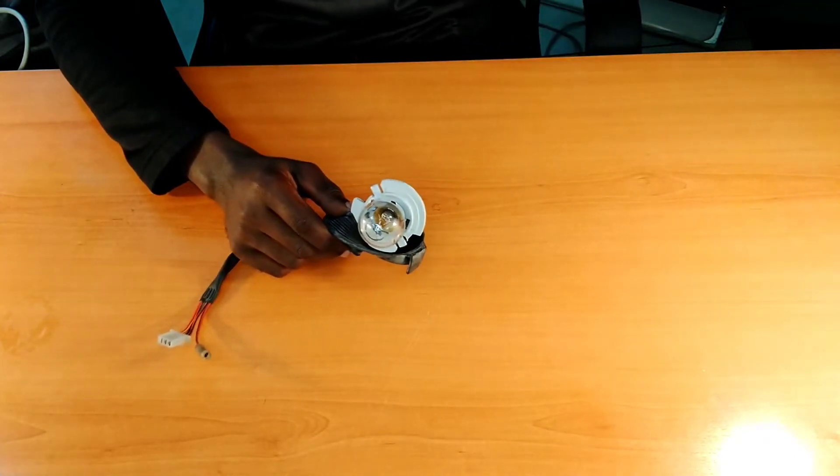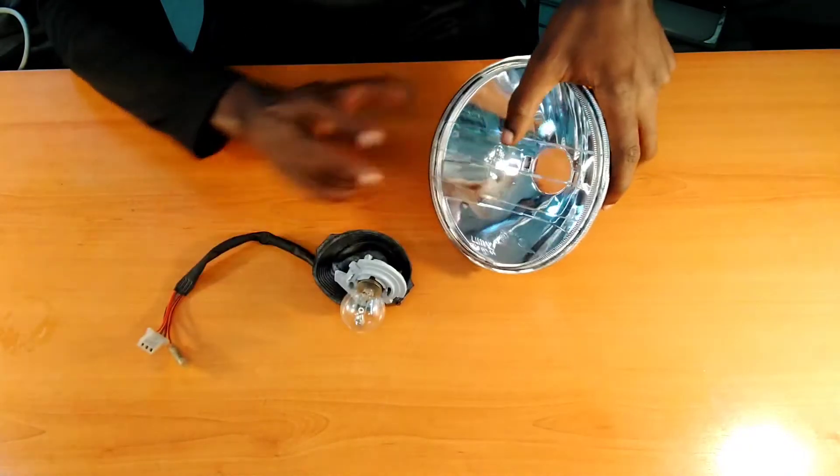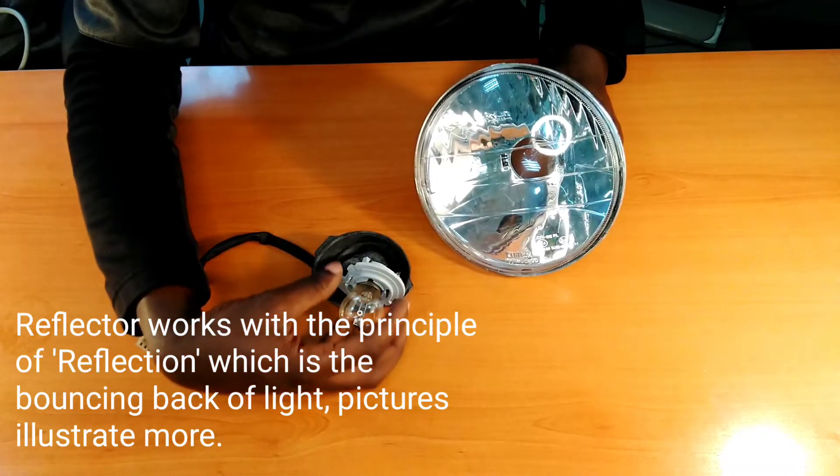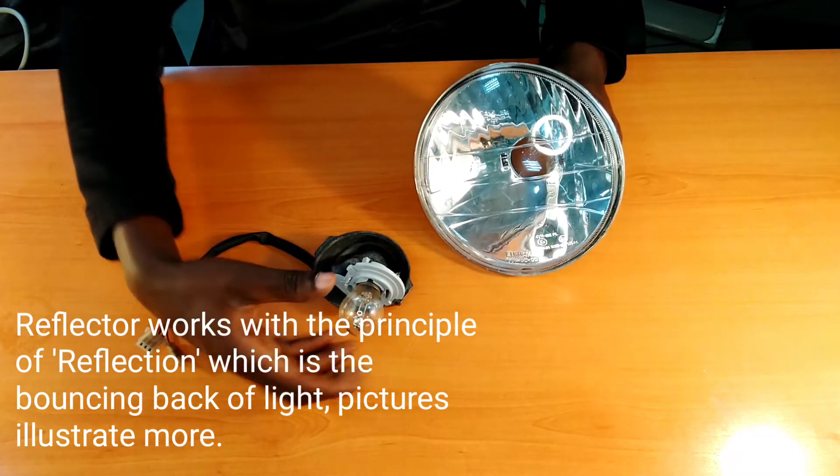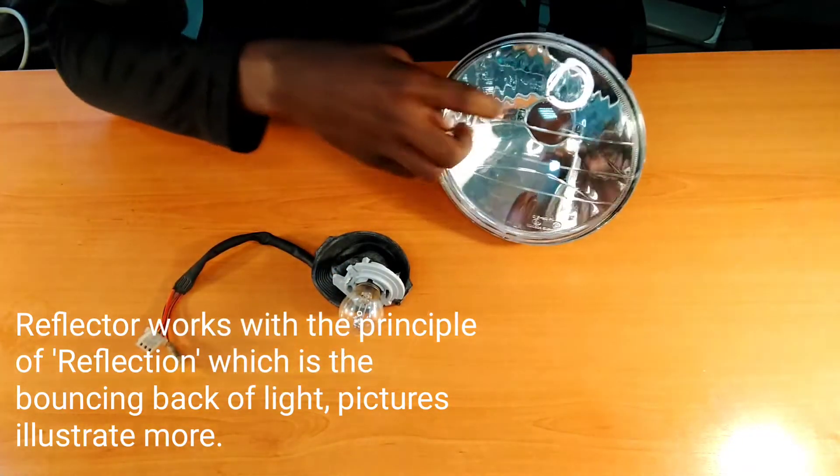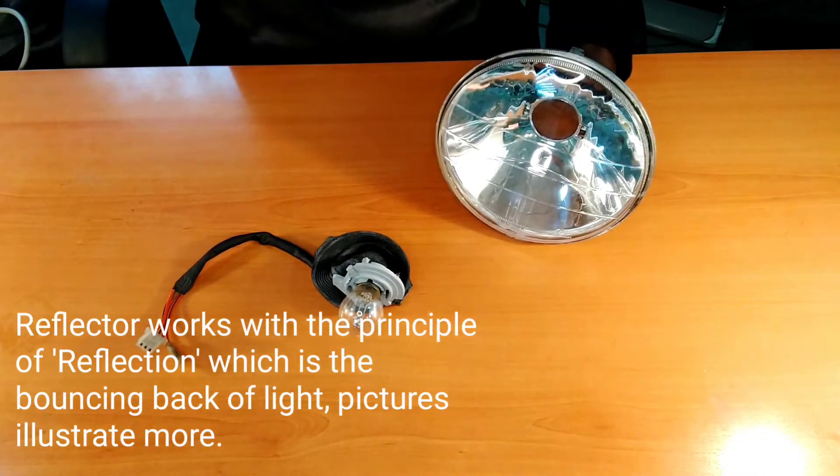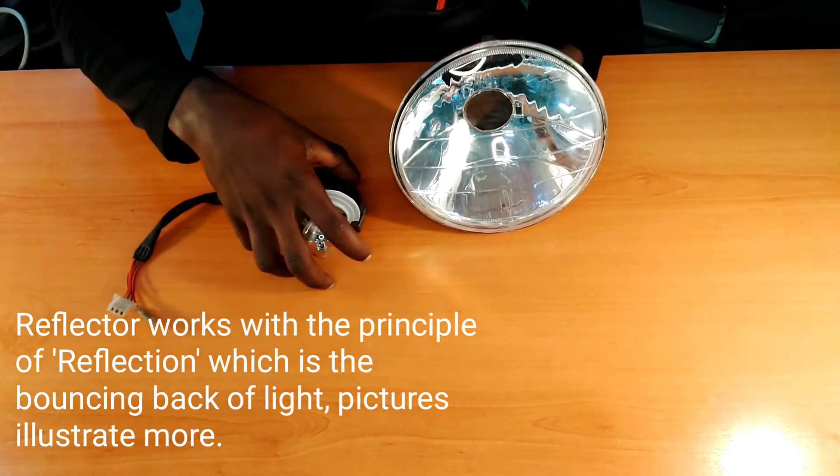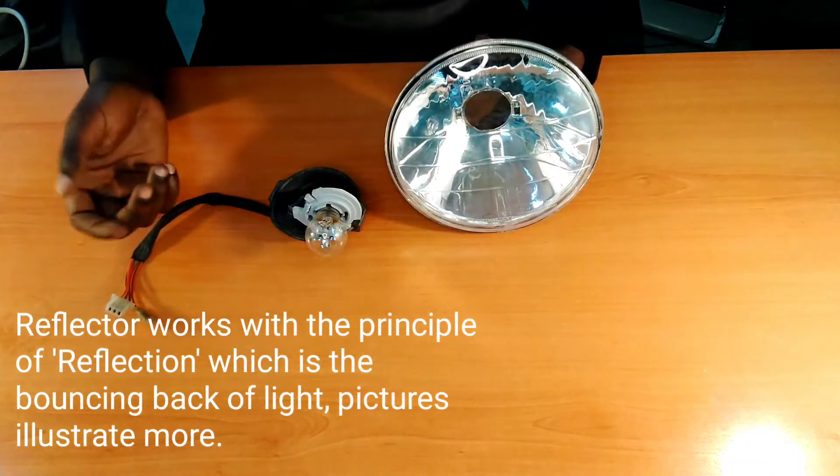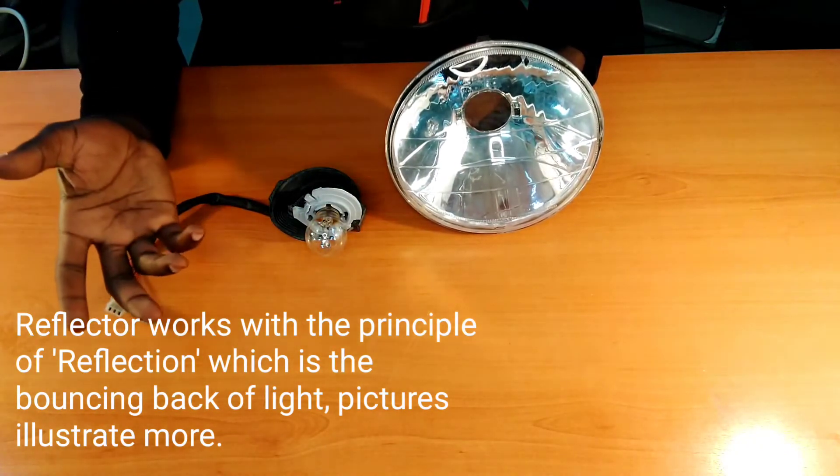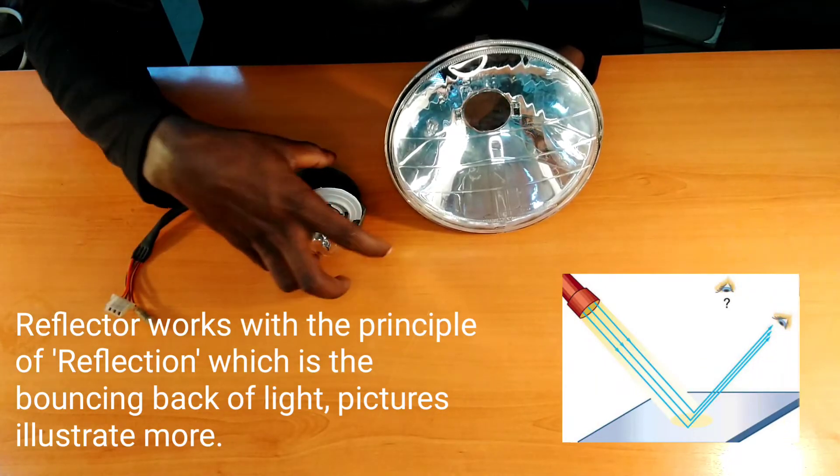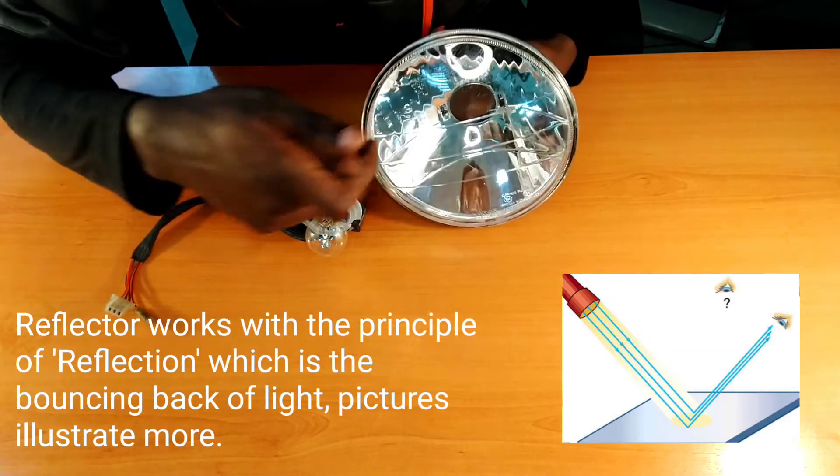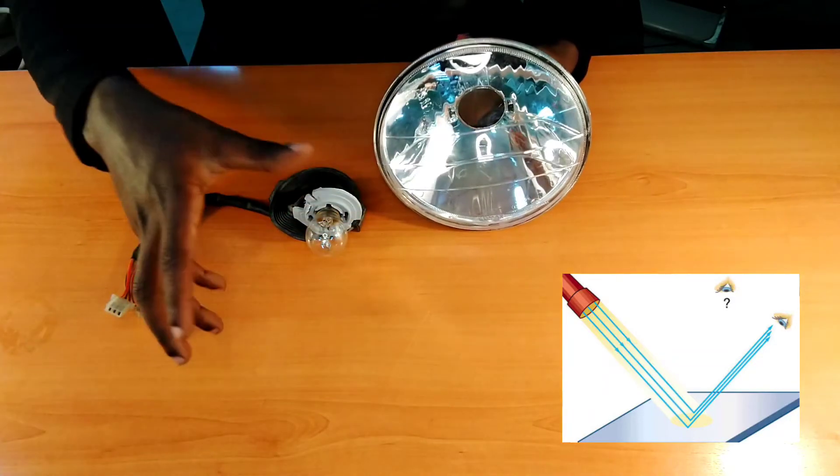That is why we are having this reflector, so the 35 wattage of our bulb will be strengthened by this reflector. The working principle of our bulb and our reflector is quite simple - that is reflection. Reflection is the bouncing back of light. Once our bulb gets powered, its rays will hit the reflector and be reflected back.